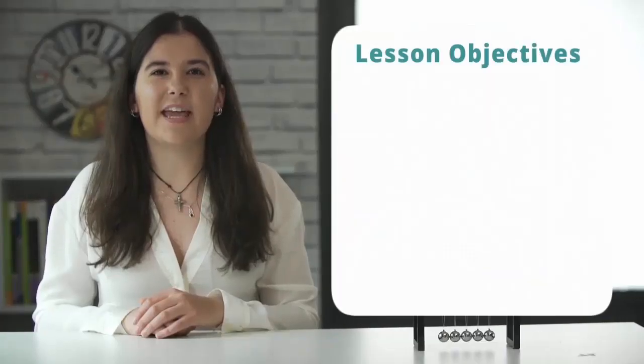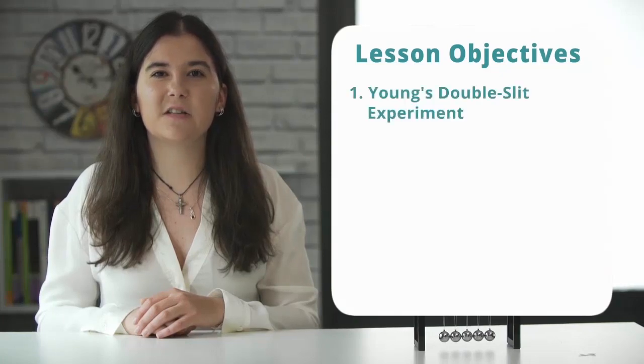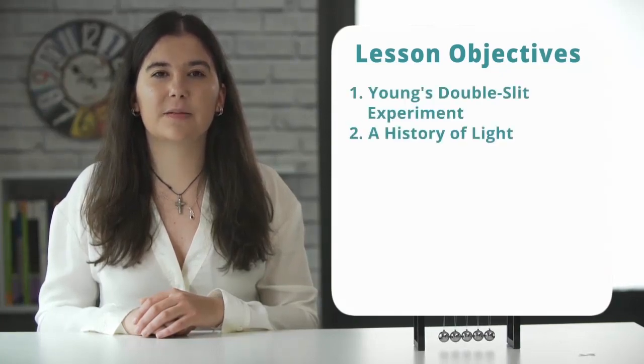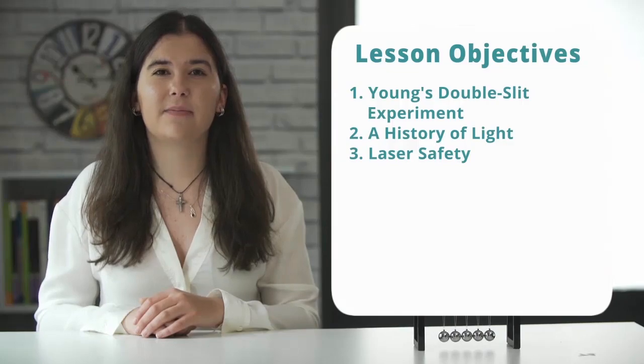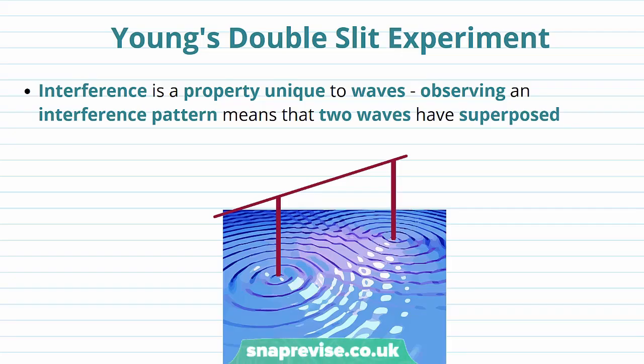In this video we're going to be looking at Young's double slit experiment, a history of light, laser safety, and we're going to finish with a summary. We're going to start off by looking at Young's double slit experiment, which demonstrates the fact that two coherent sources of light can interfere with each other.